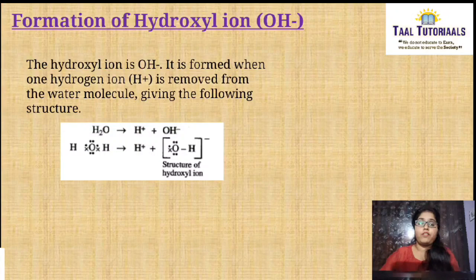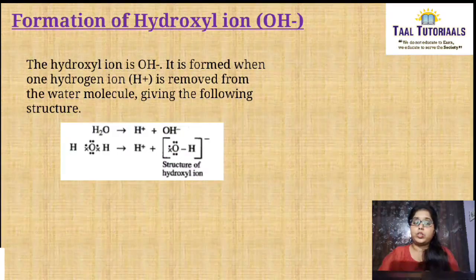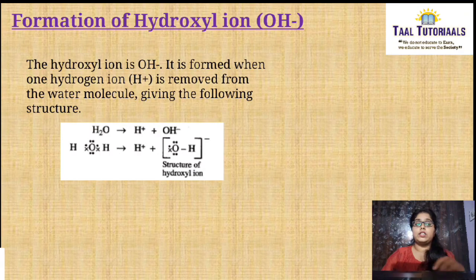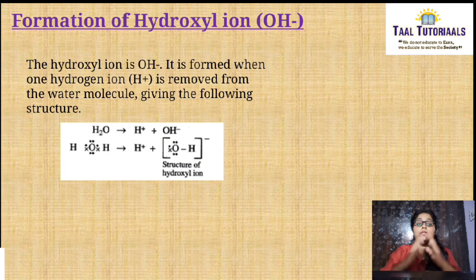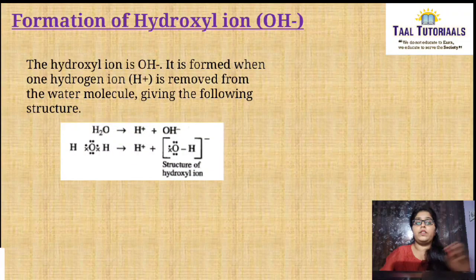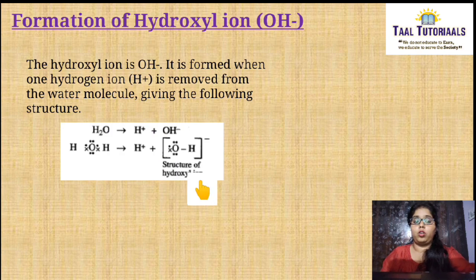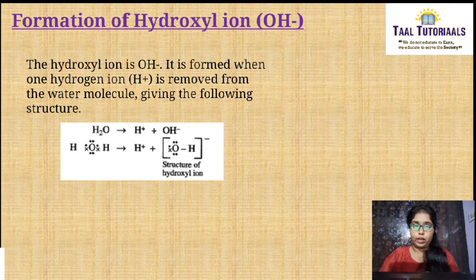Formation of hydroxyl ion: the hydroxyl ion is OH minus. It is formed when one hydrogen ion, H plus, is removed from the water molecule. H2O splits apart into H plus and OH minus. The structure of the hydroxyl ion can be seen clearly in the diagram. This is about the formation of hydroxyl ion.